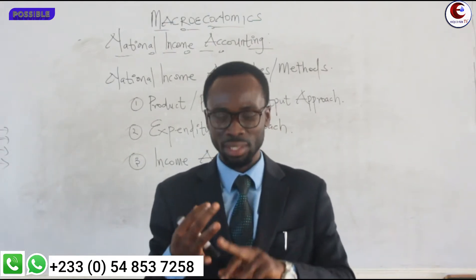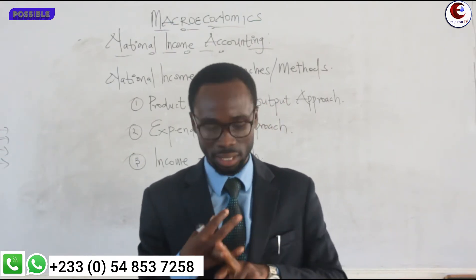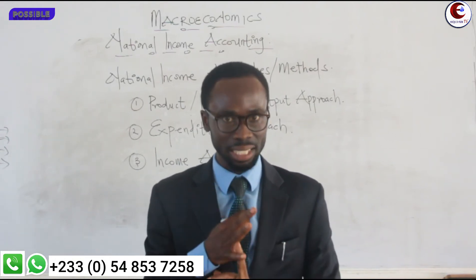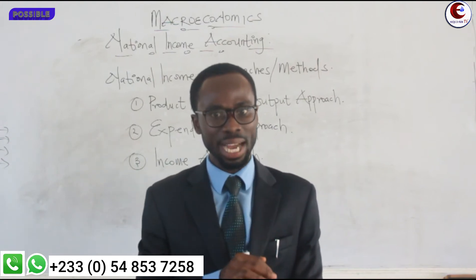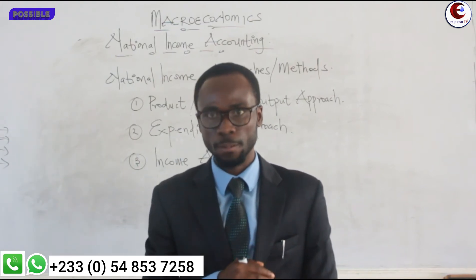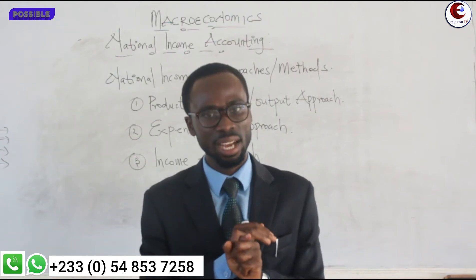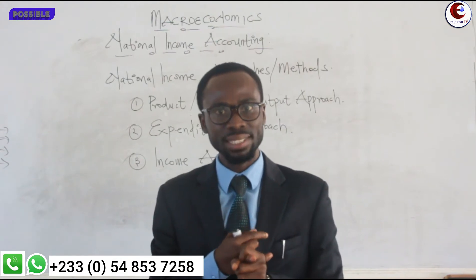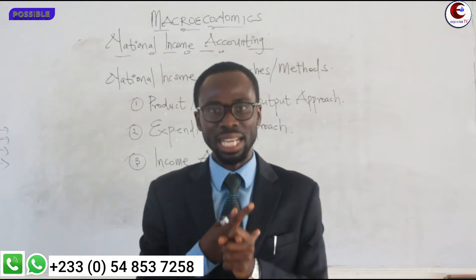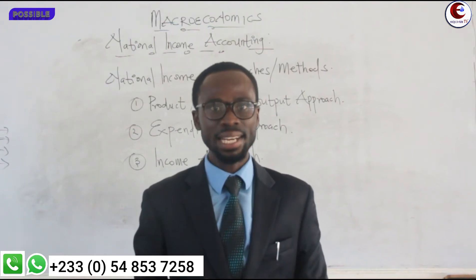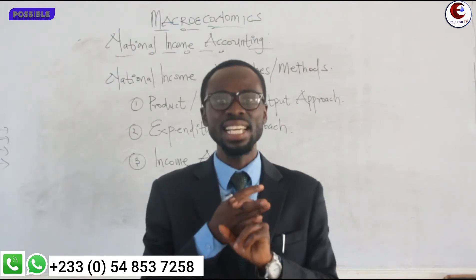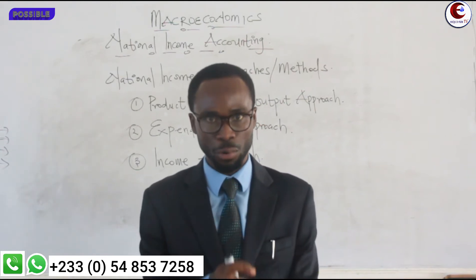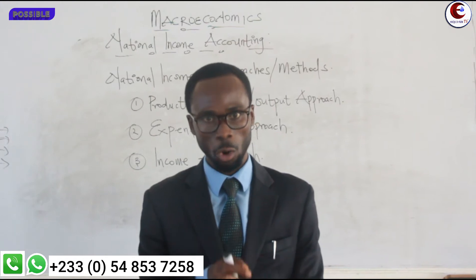The three sectors are: primary sector, secondary sector, and tertiary. To understand the product approach, all the items that fall under the primary sector will be put together with the secondary sector and put together with the tertiary sector, and then the answer that you get will give you the GDP — gross domestic products at market price.